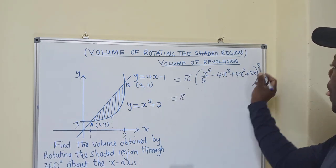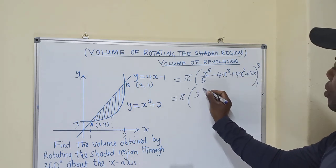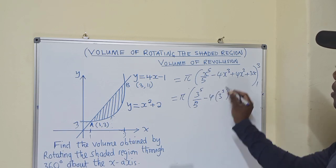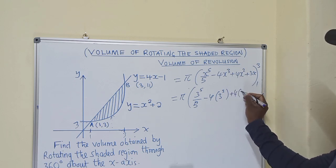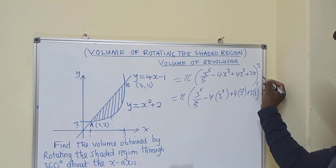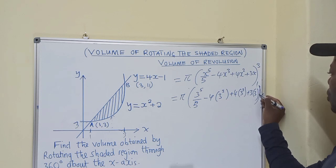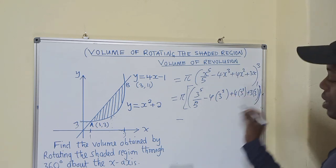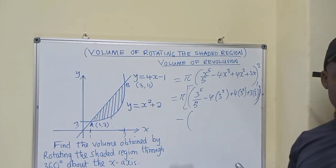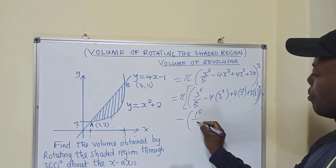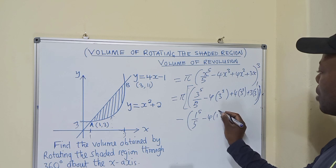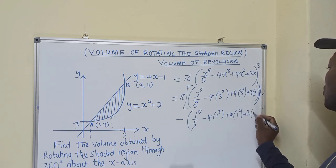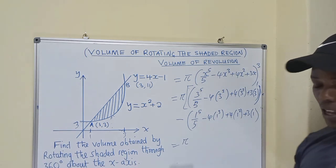So it would be pi. Here where there is x, we put a 3^5 over 5 minus 4 times 3^3, plus 4 times 3^2, plus the 3 and a 3. And you see that I've closed. You say minus. This minus must be right here. So you say minus. Now you start putting what is below. So you say 1^5 over 5 minus 4 times 1^3 plus 4 times 1^2 plus 3 times 1. Is equal to pi. Are you following? Yes.